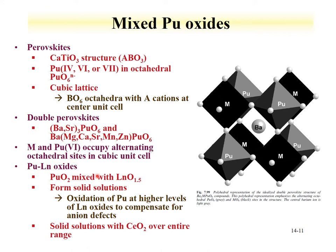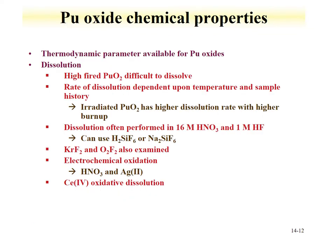Plutonium lanthanide oxides have also been evaluated, where solid solutions can be formed. For some lanthanides such as cerium dioxide, solid solutions can be obtained over the entire range. Solid solutions of plutonium have been evaluated with both the uranium and thorium systems. An overview of the chemical properties of plutonium oxides is available in the chemical thermodynamics of plutonium reference.